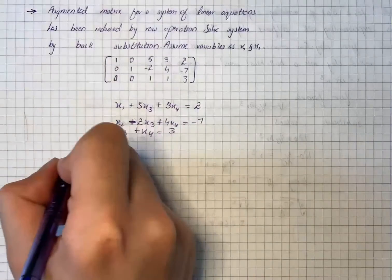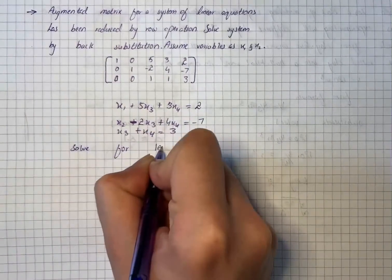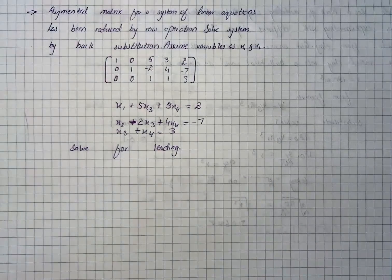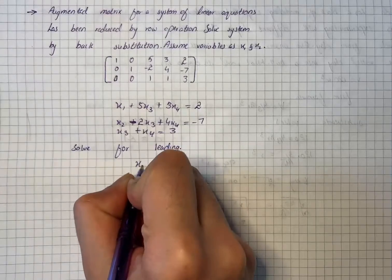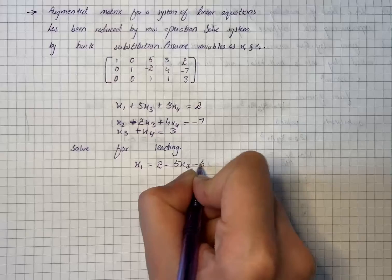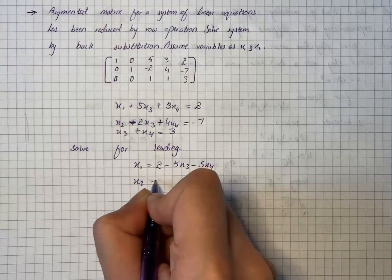Now we will solve for leading variables. So first of all we will solve for leading variables. That will give us x1 equals 2 minus 5x3 minus 5x4, and then we have x2 equals minus 7 plus 2x3 minus 4x4.